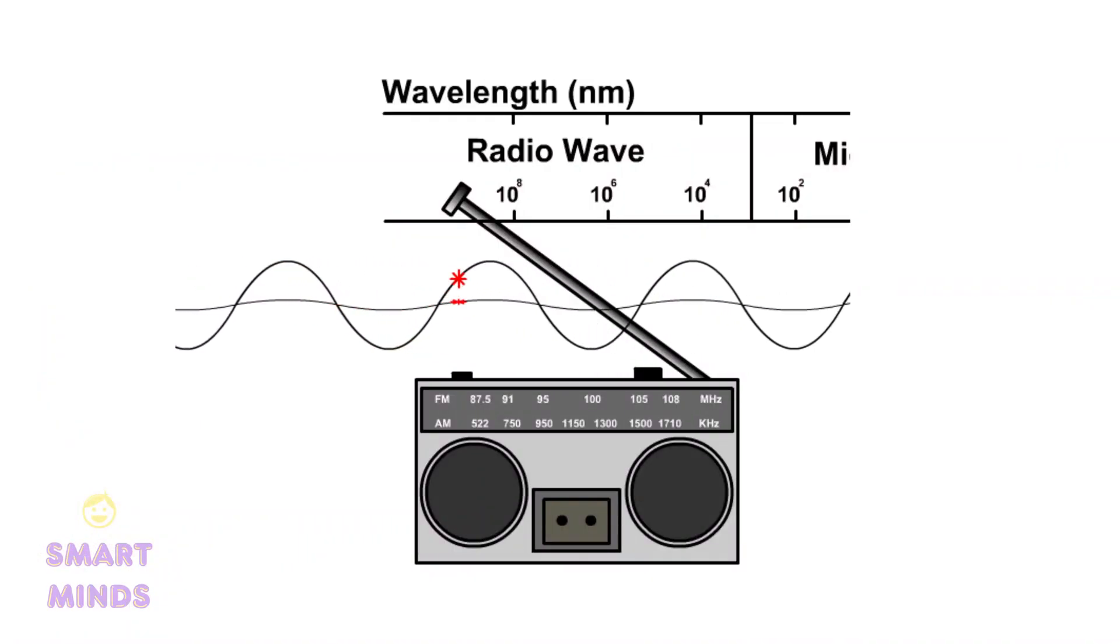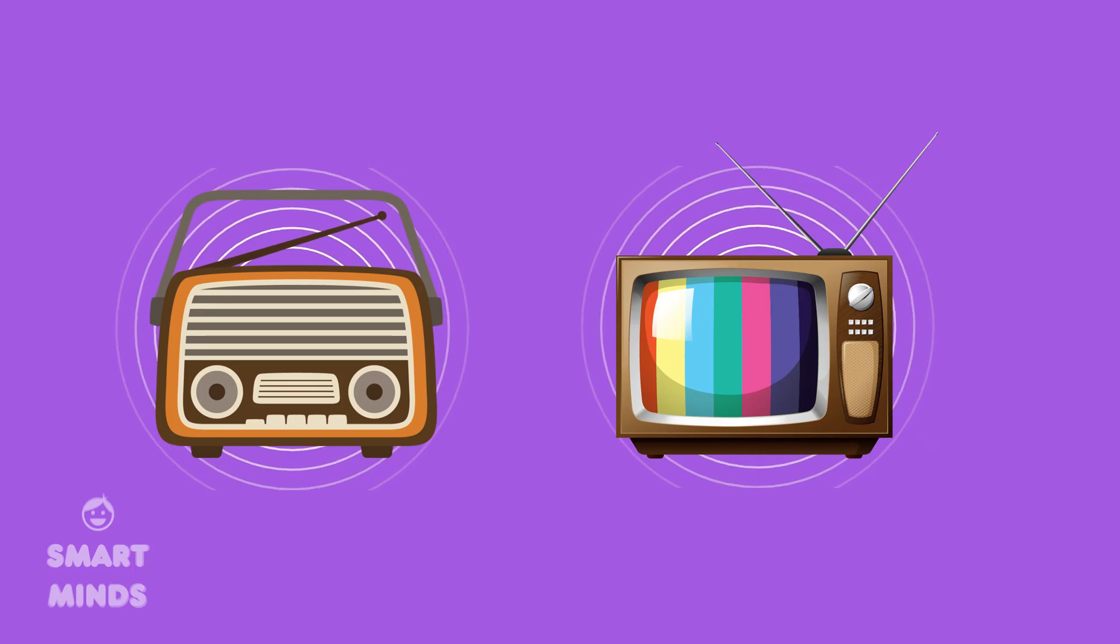Radio waves have the longest wavelength and lowest frequency and are used for communication, such as radio and television broadcasting.